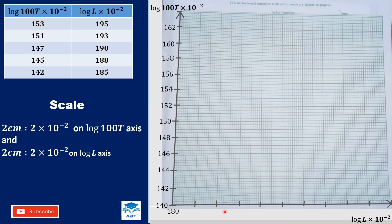And on the horizontal axis, we start from 1, 8, 0 since the minimum value is 1, 8, 5. The next will be 1, 8, 2, 1, 8, 4, 1, 8, 6 and so on. The first point, we have 1, 5, 3 on the vertical axis. 1, 5, 3 will be between 1, 5, 2 and 1, 5, 4. And then 1, 9, 5 on the horizontal axis which will be between 1, 9, 4 and 1, 9, 6.